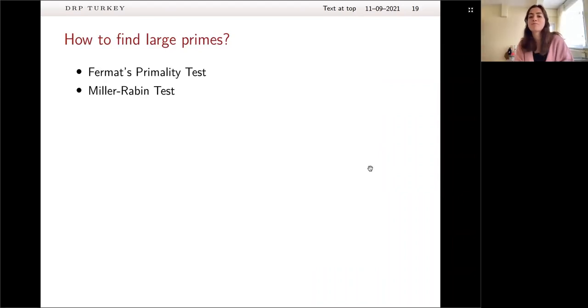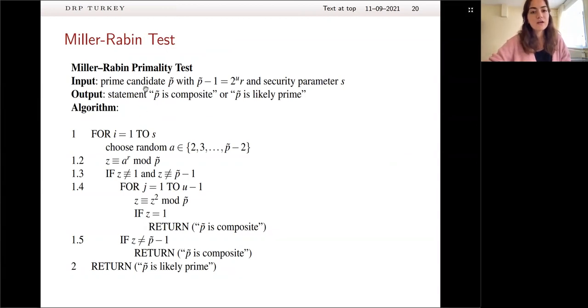So, as I mentioned, in step one of key generation, we have to find large primes, and to find large primes, we actually have two different tests, which are Fermat's primality test and Miller-Rabin test. Miller-Rabin test is actually the generalization of Fermat's primality test, and I'm going to talk about Miller-Rabin, because in RSA, we are using Miller-Rabin. So, what does Miller-Rabin do? Actually, as an input, we are entering a prime candidate P tilde with these restrictions, as you see, and security parameter S. What is a security parameter? If my security parameter S is equal to five, then it means that I want Miller-Rabin to be run five times.